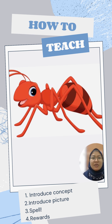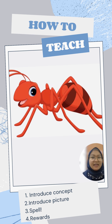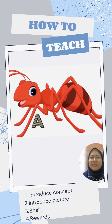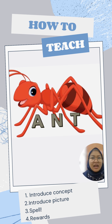Alright, so how do we introduce this picture? So, children, do you know what this is? Yes! It's an ant! How do we spell ant? Good! We start with an A — A, a, and... N, ant. T, t, ant. Good job!